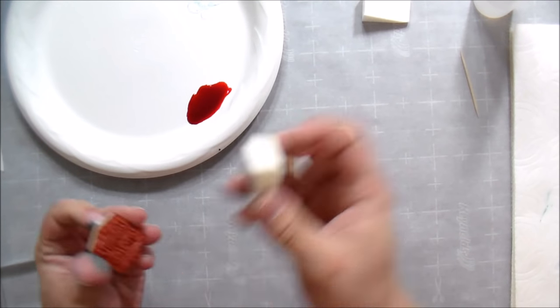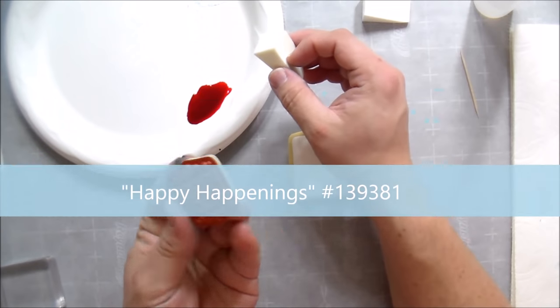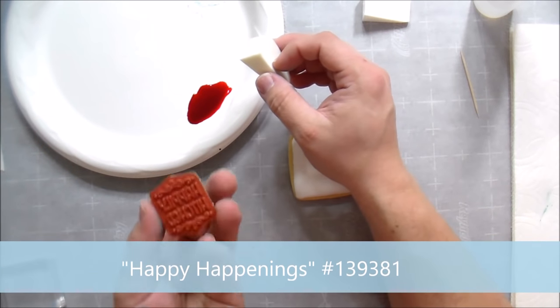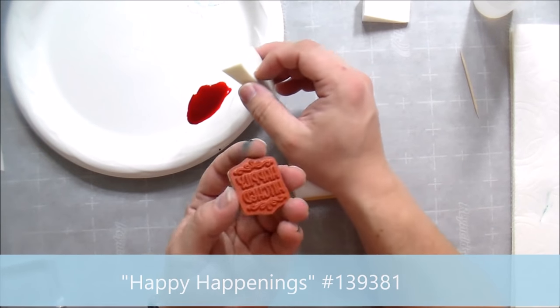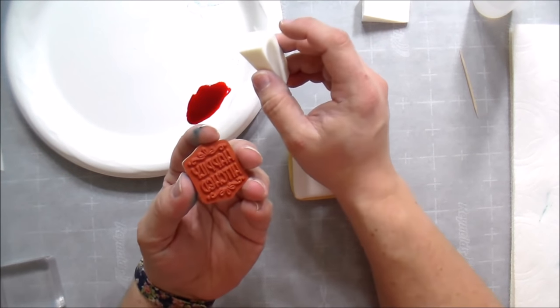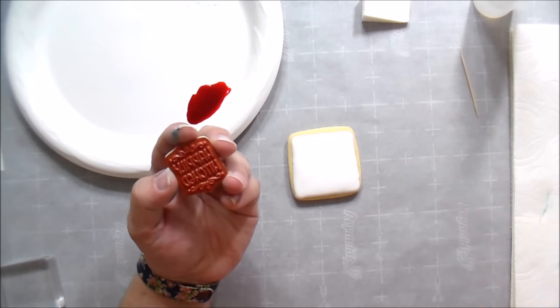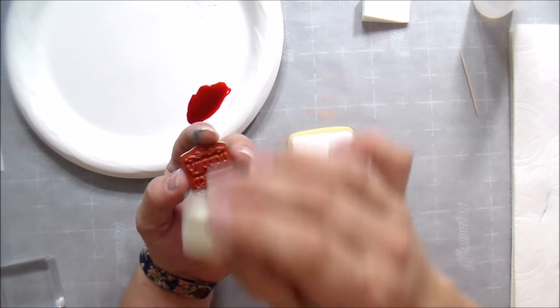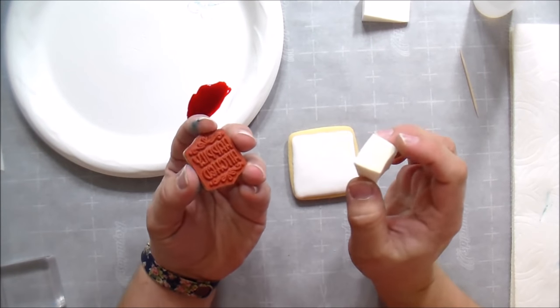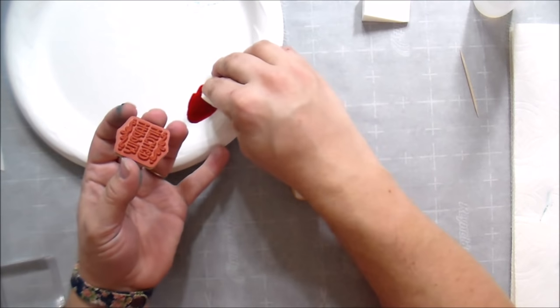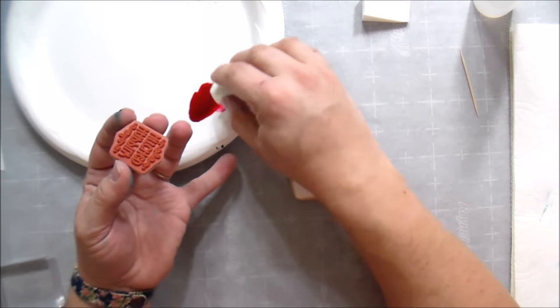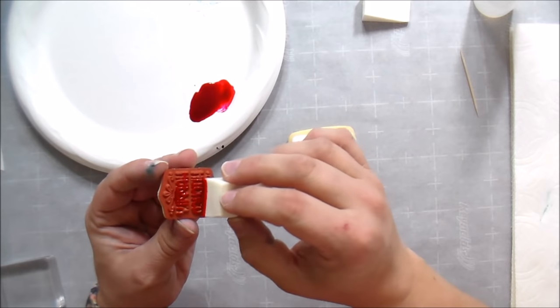Okay, so we're going to take our sponge and our stamp. Notice I do not have this on a block right now. There is a reason for that and this is one of the reasons why I dislike using wood stamps to do this particular technique. You need to be able to make sure you're getting even pressure all the way throughout the stamp. So we're going to take our food coloring, dip our sponge in, and dab it on our stamp.